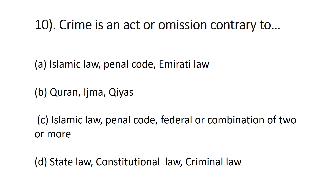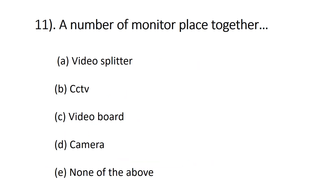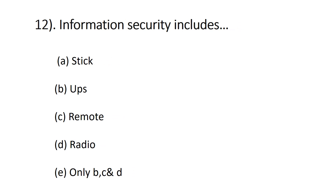Question number eleven: a number of monitors placed together in a CCTV room — A) video splitter, B) CCTV, C) video board, D) camera, E) none of the above. The right answer is C, video board.